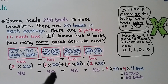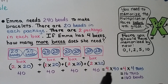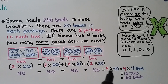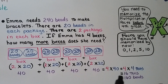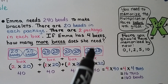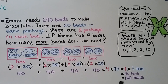We have 1, 2, 3, 4 forties — that's 4 times 40. We have 4 groups of 40, which we can write with place value as 4 times 4 tens. The basic fact is 4 times 4, which is 16, so we have 16 tens. That means right now, if she has 4 boxes, she has 160 beads.